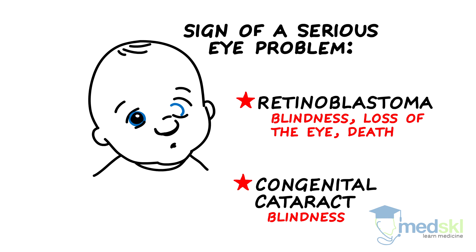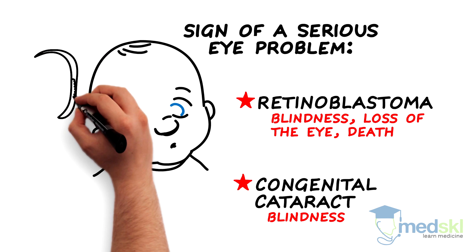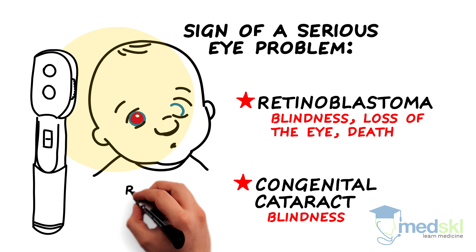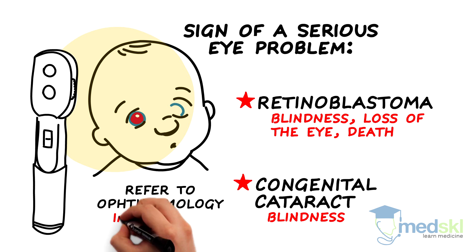To rule these conditions out, all children should be examined for a normal red reflex with a direct ophthalmoscope during routine check-up, starting from birth. If the red reflex in one or both eyes is dark or white, this indicates something is blocking the light from entering the eye and could be a sign of retinoblastoma or congenital cataract, and must be referred to ophthalmology immediately.